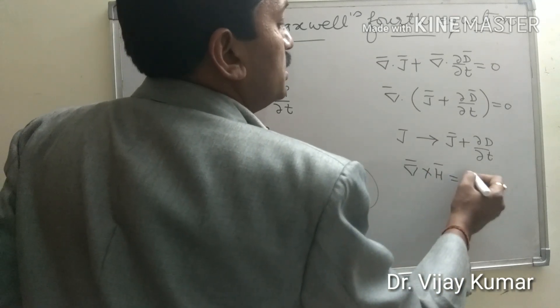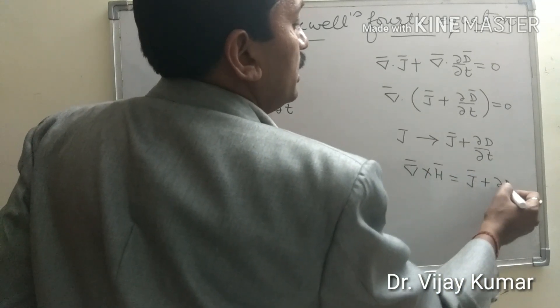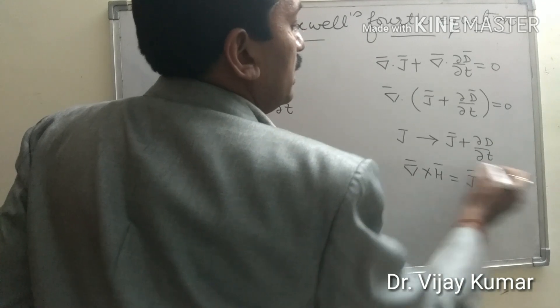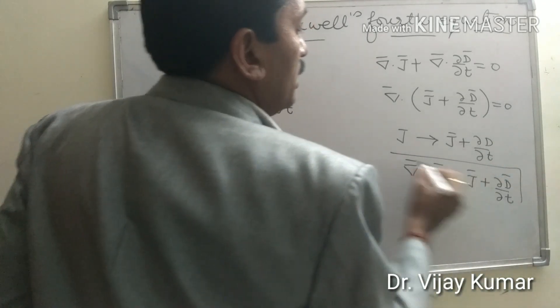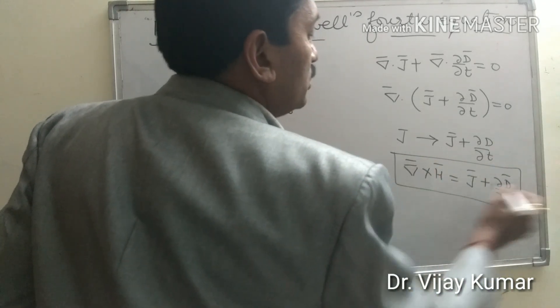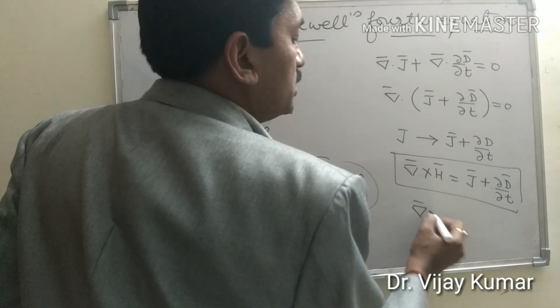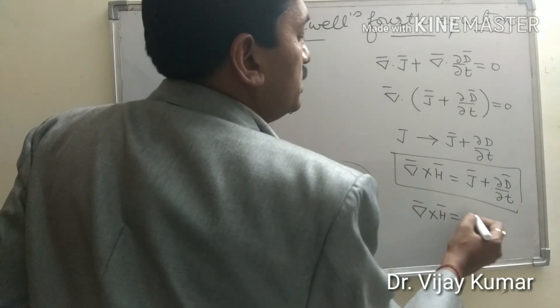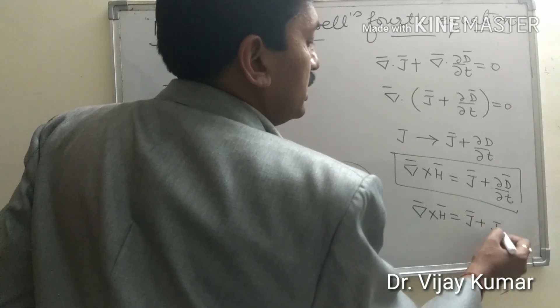equal to J plus del D over del t. And we can also write it del cross H equal to J plus Jd.